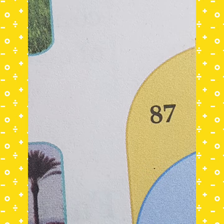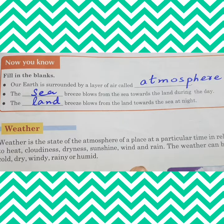Please look at your book page number 87. There is a fill-in-the-blanks box. Number 1: Our earth is surrounded by a layer of air called — atmosphere. Number 2: The dash breeze blows from sea towards the land during the day — sea breeze. Number 3: land breeze. So these are the 3 fill-in-the-blanks from page number 87.